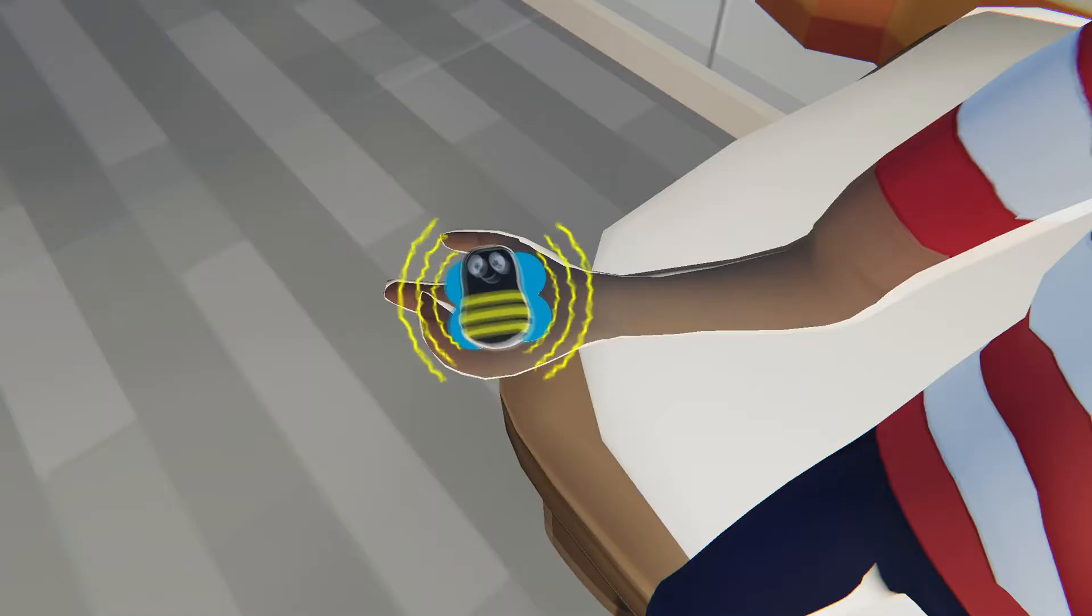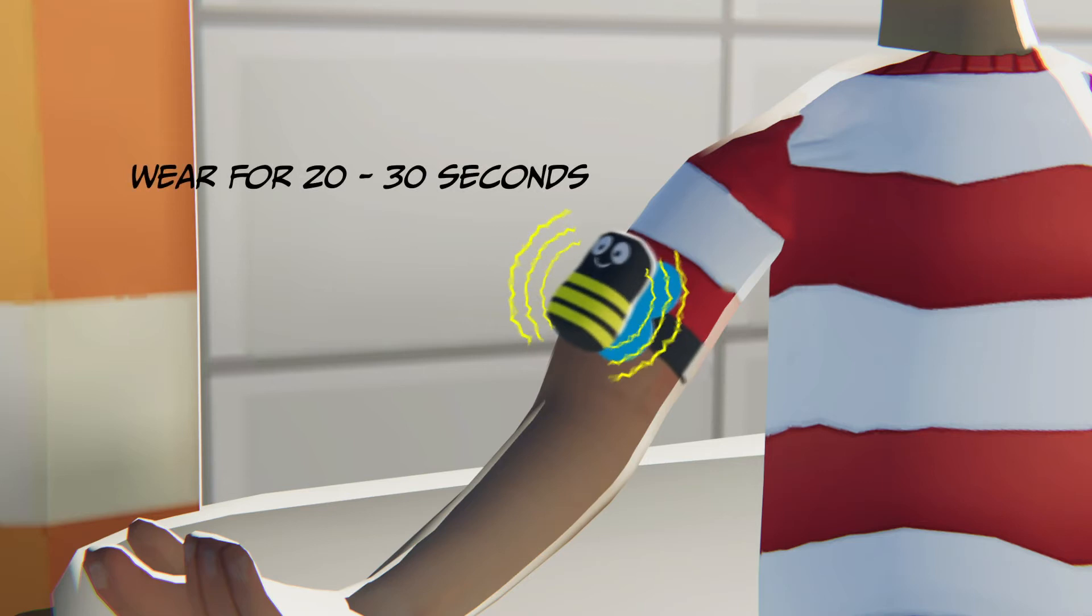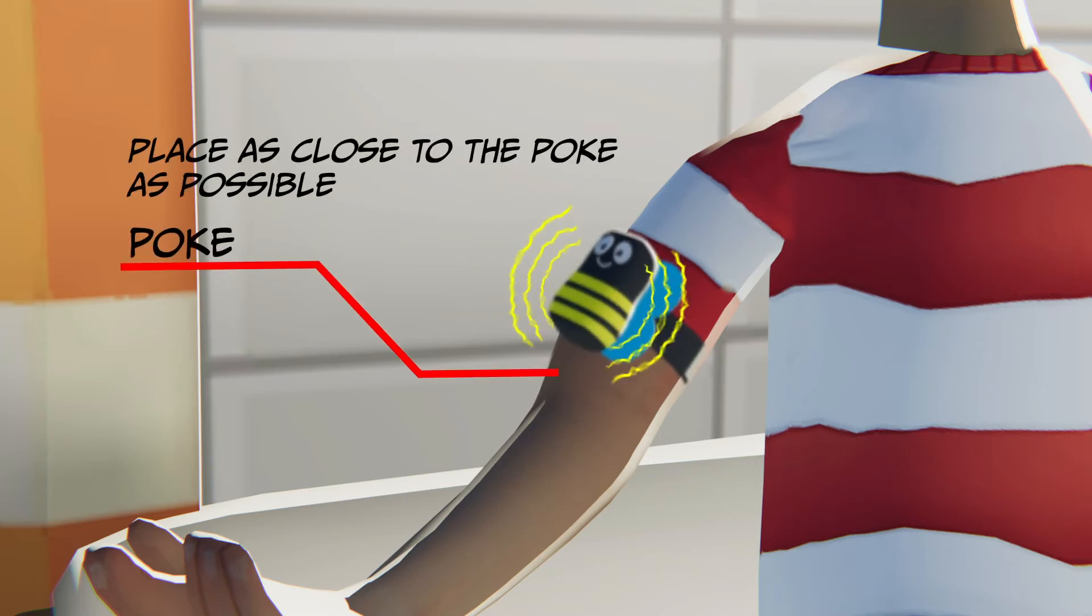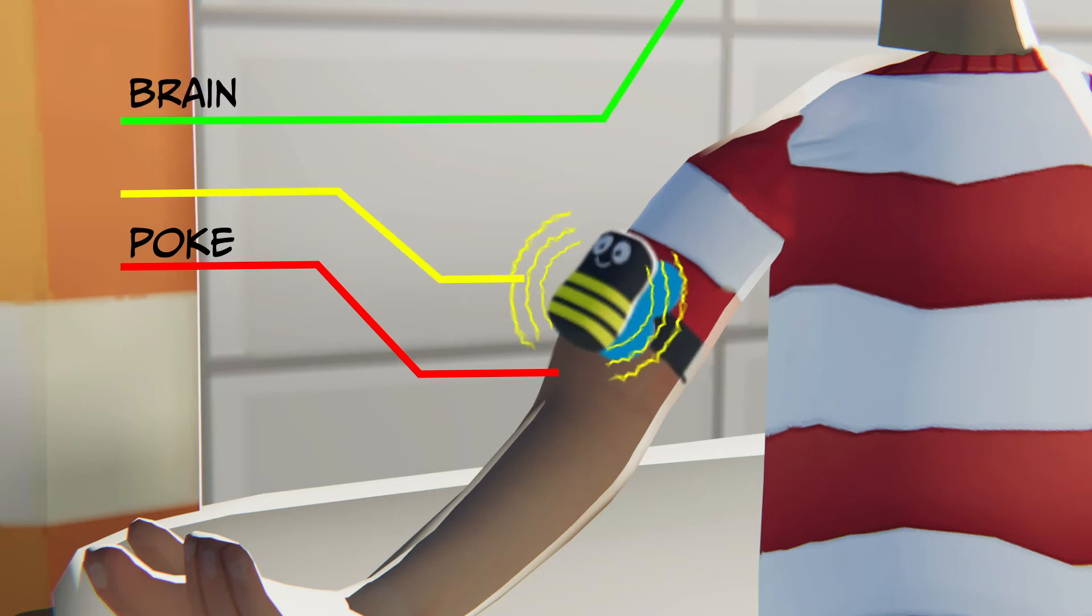For kids, it's super helpful to let the child play with Buzzy before so they can get used to the sound and the sensation. You should hold Buzzy on the skin for about 20 to 30 seconds before the poke. Place it as close to the poke as possible. It just needs to be between the poke and the brain.